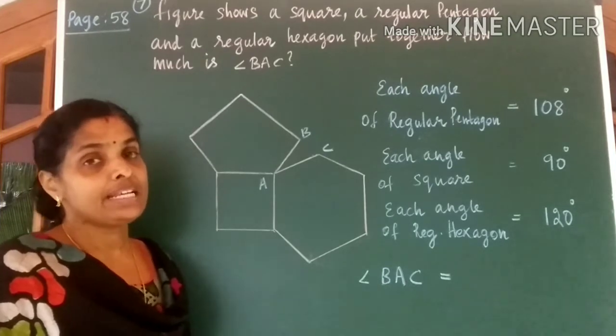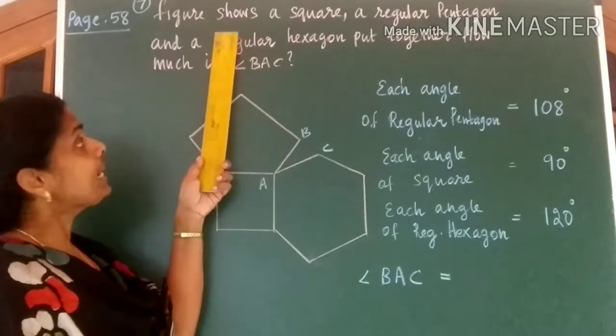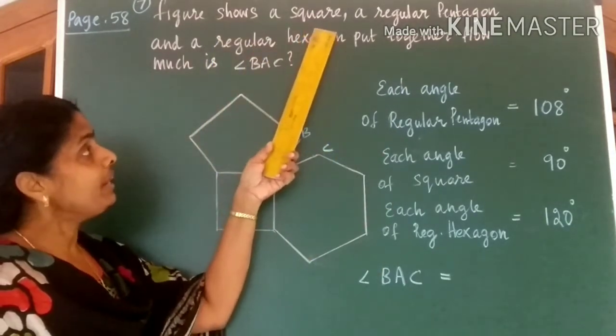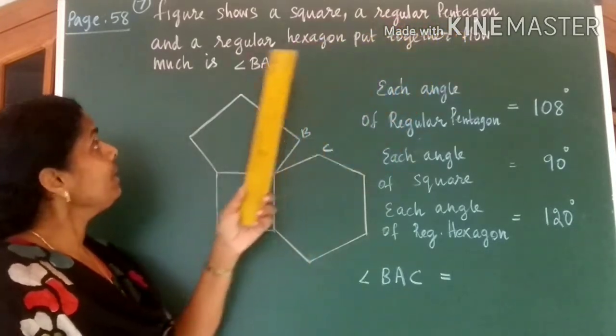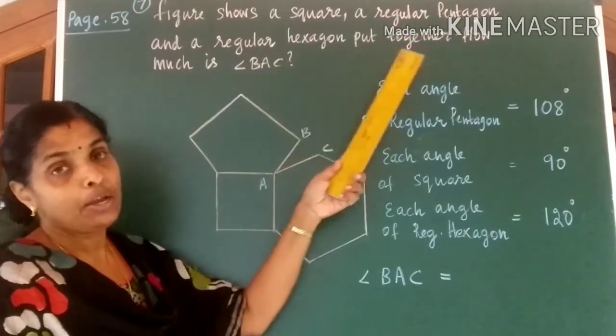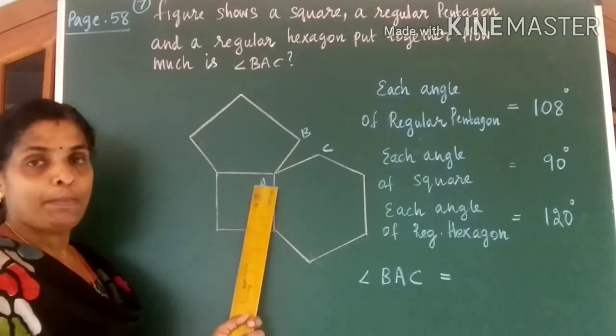Let us discuss the 7th question. Figure shows a square, a regular pentagon and a regular hexagon put together. Look at the picture.